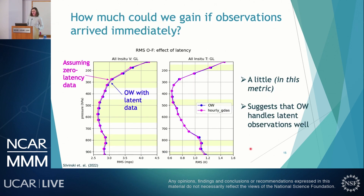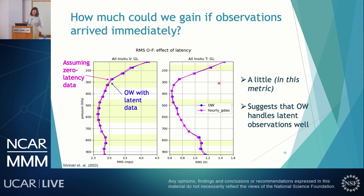A natural question is how much could be gained without observation latency. Comparing overlapping windows with and without latency, the improvement from assuming all observations arrive immediately is actually not as large as expected. There's some significant improvement particularly in wind, but the differences are smaller than going from six-hourly to hourly, and little improvement in temperature. This suggests overlapping windows actually handles late-arriving observations pretty well — rather than indicating we need to invest heavily in getting observations faster.